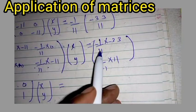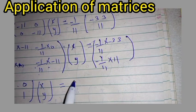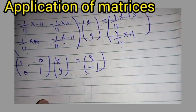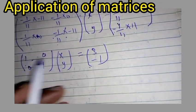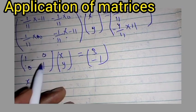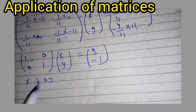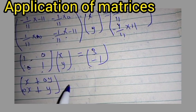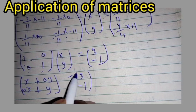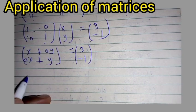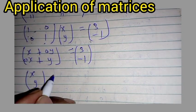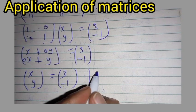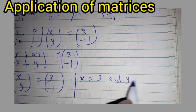On the right-hand side: negative 1 over 11 times negative 3 gives 3, and negative 1 over 11 times 11 gives negative 1. So we have 1 times x plus 0 times y equals x, and 0 times x plus 1 times y equals y. This gives [x, y] equal to [3, -1], meaning x equals 3 and y equals negative 1.